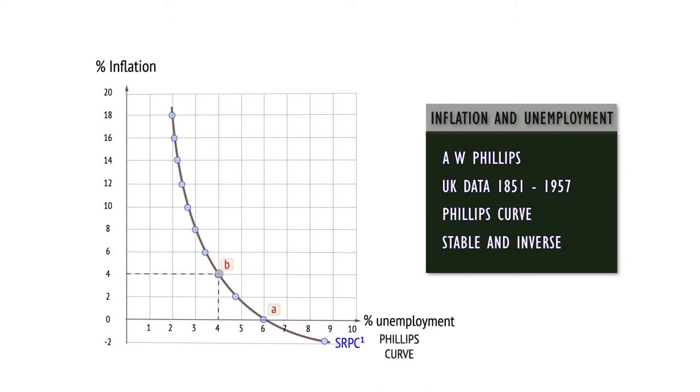Policymakers were quick to exploit the curve. If the economy was operating at point A, with unemployment troublingly high at 6%, the government would pump up demand with a fiscal stimulus. It could then predict that, sometime later, inflation would rise to 4% as the economy moved to point B.